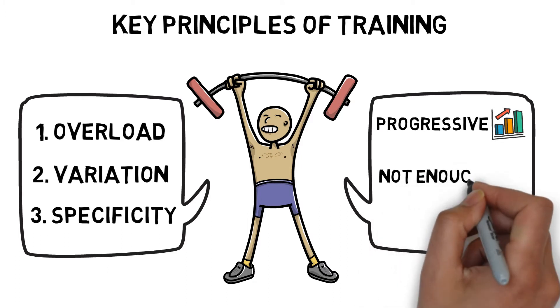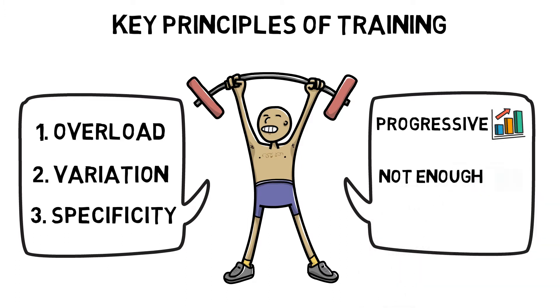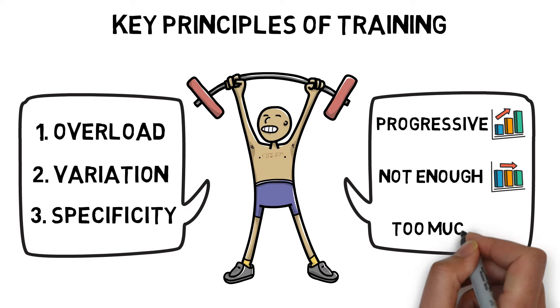If there is not enough stimulus, then we would expect performance to plateau or start to decrease. And if there is too much stimulus, then there is a risk of maladaptation, which could also decrease performance levels.